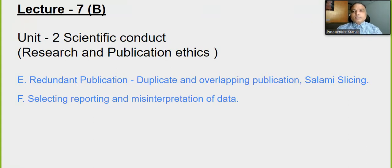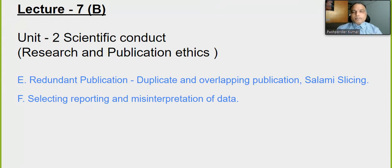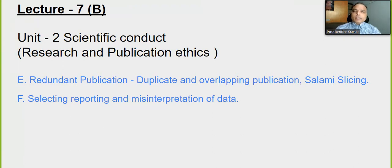Today we're going to discuss redundant publication, duplicate and overlapping publications, salami slicing, and selective reporting and misinterpretation of data. These two topics we're going to cover. There may be instances where you have written one article — when working on your PhD thesis or MPhil — you publish one paper covering most of your research work, and then in a second or third paper you just take the same paper and get it published, which would be a kind of duplication of publication.